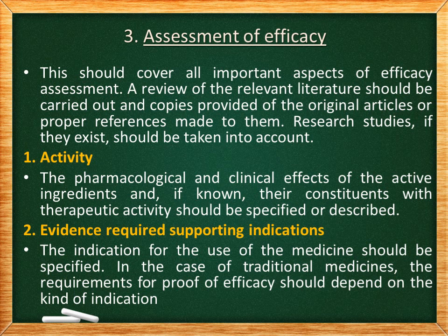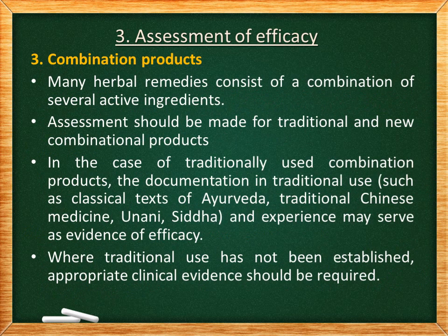Second, the evidence required supporting the indication: the indication for the use of the medicine should be specified. In the case of traditional medicine — for example, Ayurvedic medicine — the requirements for proof of efficacy should depend on the kind of indication. Third, combination products: many herbal remedies are polyherbal formulations, so the assessment should be made for traditional and new combination products separately. For traditional products such as Ayurveda, traditional Chinese remedies, Unani, and Siddha medicine, documentation based on experience may serve as evidence of efficacy. Where traditional use has not been established, appropriate clinical evidence should be required.